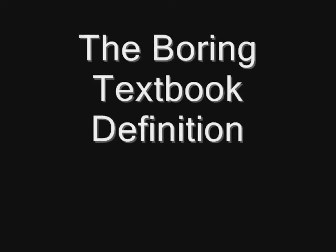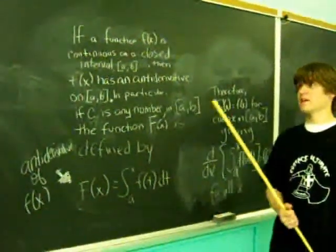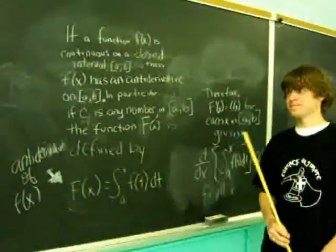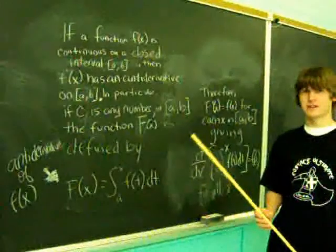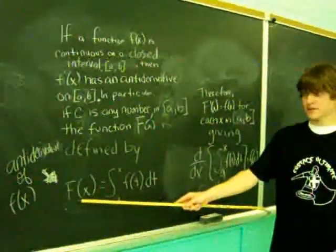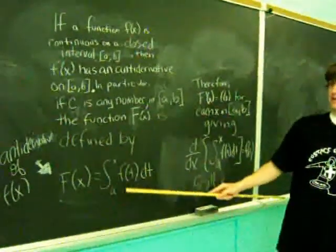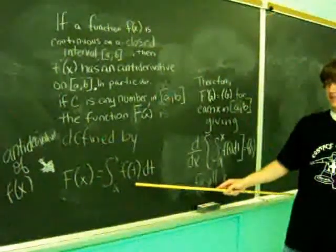The second fundamental theorem of calculus. The function f of x is continuous from a closed interval from a to b. Then f of x has an antiderivative on a to b. In particular, if c is any number in a to b, the function F of x is defined as the antiderivative of f of x, which equals the integral from a to x of f of t dt.